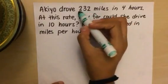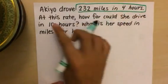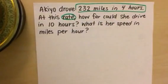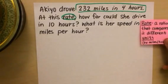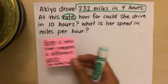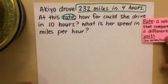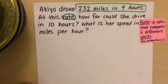Akio drove 232 miles in 4 hours. At this rate, how far could she drive in 10 hours? And what is her speed in miles per hour? So remember that this problem tells us it's a rate, right? Which is a ratio that just compares two different units. So miles per hour. I'm going to leave that right there.